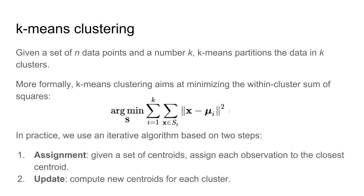This is based on k-means clustering, and this is just a one-slide recap of what k-means clustering aims to do: minimizing the within-cluster sum of squares, which in practice means having an iterative two-step algorithm — first you assign, given a set of centroids, the observations to the closest centroids, and then you update with a new centroid for each cluster.